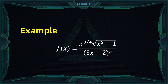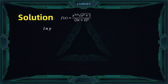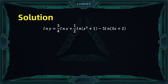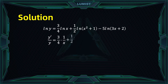Going back to the example, we use the properties of logarithm to simplify. Taking ln of both sides gives: ln y = (3/4) ln x + (1/2) ln(x² + 1) − 5 ln(3x + 2), by bringing powers over. Then taking the derivative of both sides: the left side gives y′ over y, and the right side gives (3/4)(1/x) + (1/2)(2x/(x²+1)) − 5(3/(3x+2)).